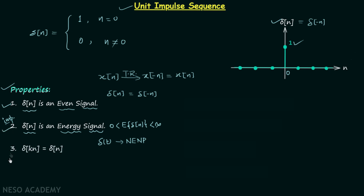Now the third property: delta[kn] equals delta[n], meaning there is no effect of time scaling. Performing time scaling on delta[n] yields the same signal. Looking at the plot, delta[n] is only non-zero and equal to 1 when n equals 0; all other values are 0. During time expansion, that value remains as-is, and all other samples remain 0, so there is no effect. Similarly, time compression has no effect on the overall signal.